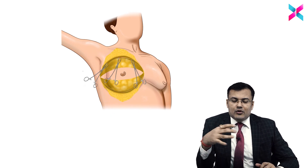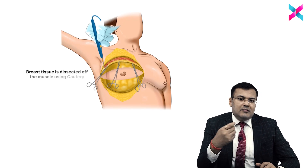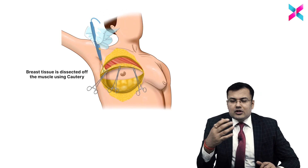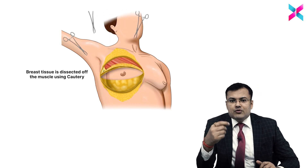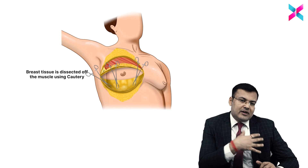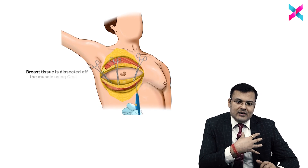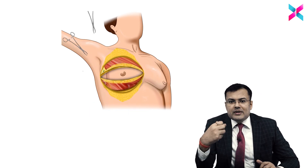After that, you can see which muscle is just behind the breast — pectoralis major. We are going to dissect off the breast tissue with the help of cautery from the underlying muscle. And after that, we are removing the whole breast tissue.